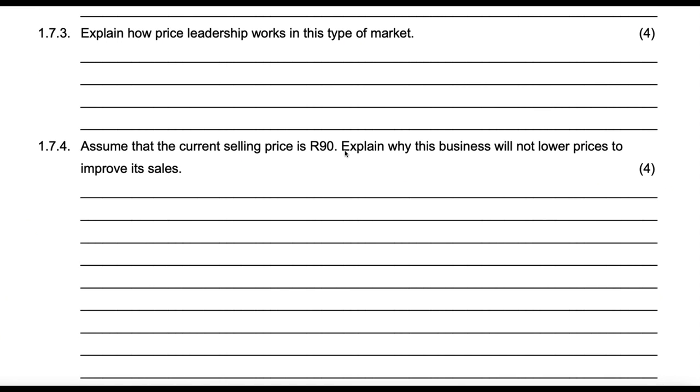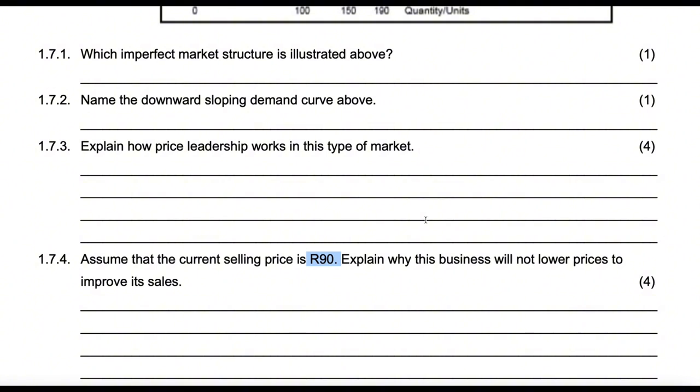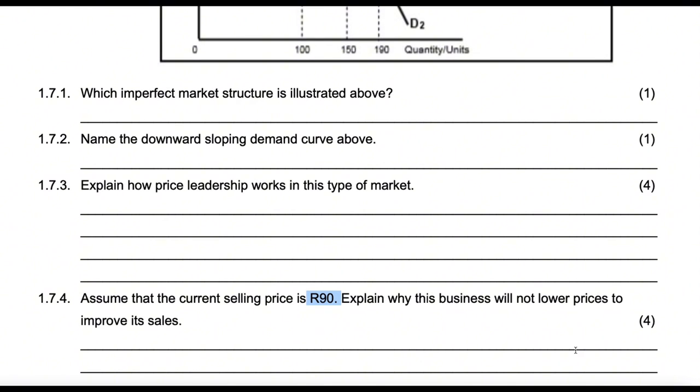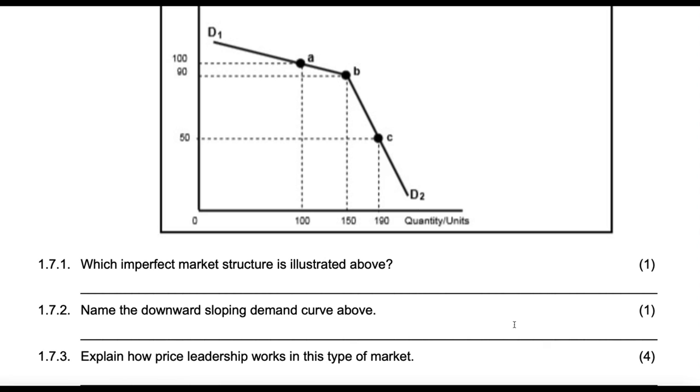So that's how it works. For max marks, two points there. Then assume that the current selling price is 90. Of course, it would be 90. Explain why this business will not lower their price or even increase their price to improve sales. Basically, because at a lower price, the demand curve will not be as responsive as it is at a higher price.